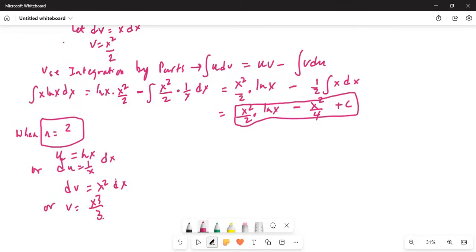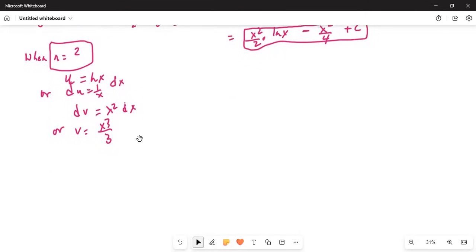Thus, originally, x squared ln x dx is equal to first u times v, which is ln x times v is x cubed by 3, this is multiplication sign, x cubed by 3.